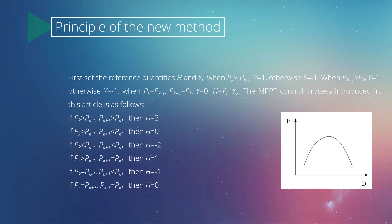The MPPT control process introduced in this article is as follows. If pk is greater than pk-1 and pk+1 is greater than pk, then h equals 2. If pk is greater than pk-1 and pk+1 is smaller than pk, then h equals 0.